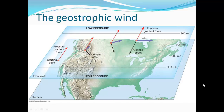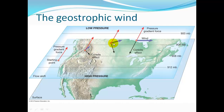Up at high altitude we have geostrophic air. With a pressure gradient, the air moves in that direction, but as it travels the Earth is rotating, so we have a Coriolis effect. The actual wind direction ends up being in between the pressure gradient direction and the Coriolis effect.